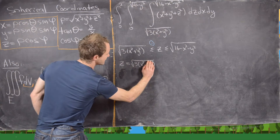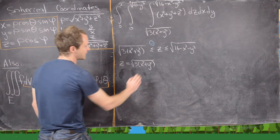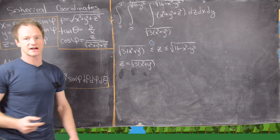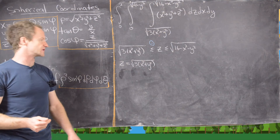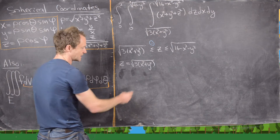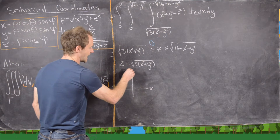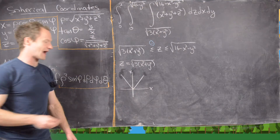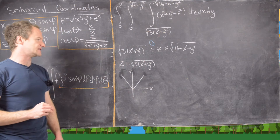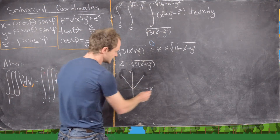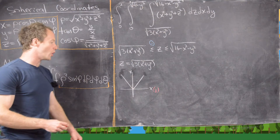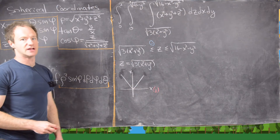I like to cover up one variable at a time and see what kind of curve I get. If I cover up the variable y, I get z equals essentially the square root of x squared, and the square root of x squared is the absolute value of x. So in the x-z plane this looks like the absolute value of x. Doing the same for x gives z equals the absolute value of y. So this surface opens like an absolute value function in both directions.